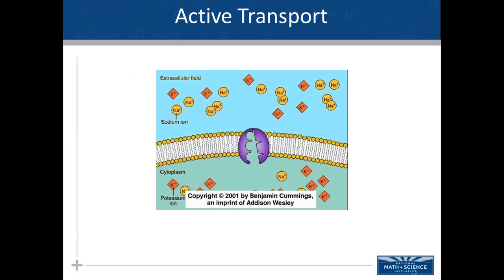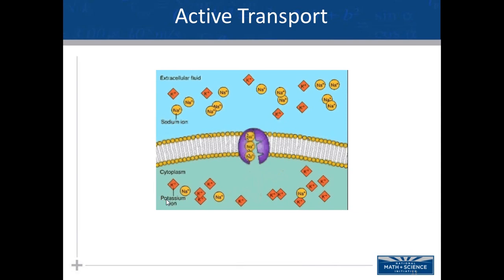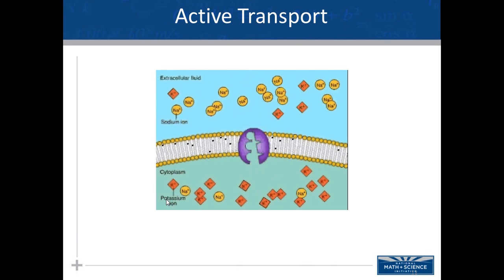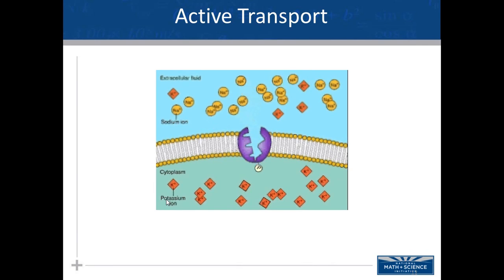Sometimes a cell needs to move a solute against its concentration gradient. This process is called active transport and requires ATP. Most animal cells need to expel sodium ions (Na+) and take in potassium ions (K+), both against their concentration gradients. Sodium ions bind to a transport protein; ATP transfers a phosphate group, causing the protein to change shape and push sodium ions out of the cell. Potassium ions then bind, the phosphate is released, the protein returns to its original shape releasing potassium inside the cell, and the process repeats.